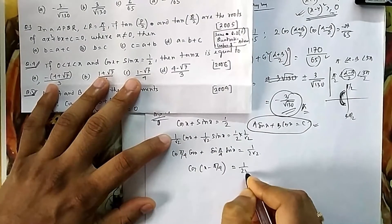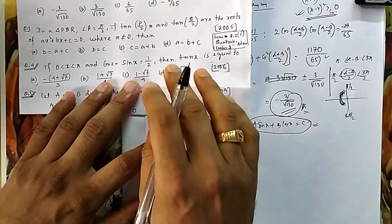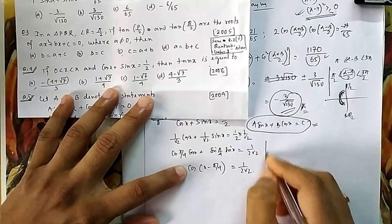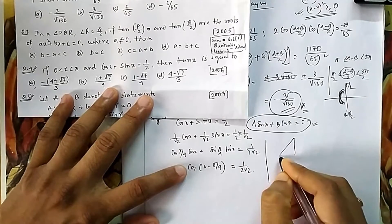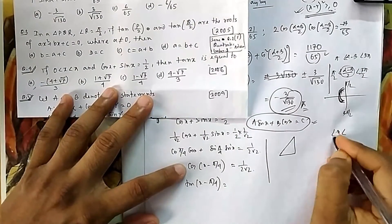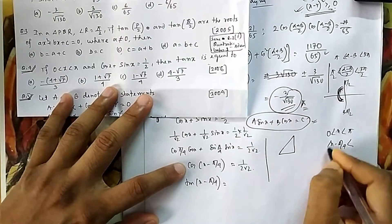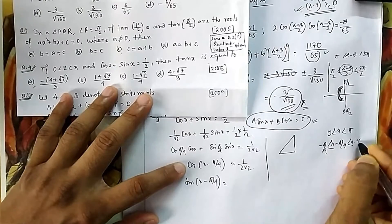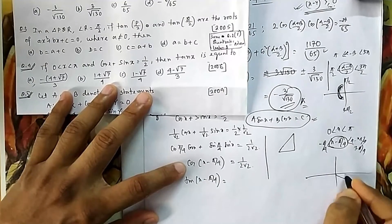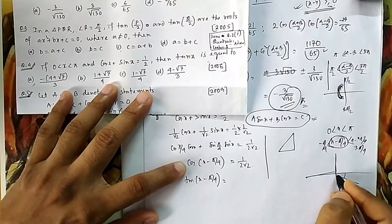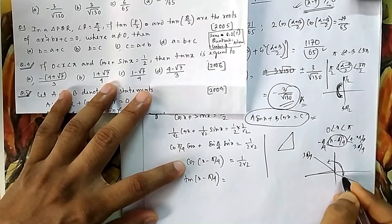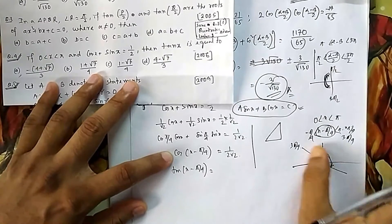So we get cos(x - π/4) = 1/(2√2). Now since x lies between 0 and π, x - π/4 lies between -π/4 and 3π/4. This angle spans the first, second, and part of the fourth quadrant, so tan(x - π/4) can be both positive and negative — we need to be careful with the sign.